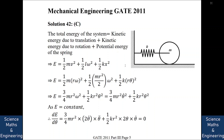Substituting, E = (1/2)m(rω)² + (1/2)(mr²/2)ω² + (1/2)k(rθ)², which simplifies to E = (3/4)mr²ω² + (1/2)kr²θ². Writing ω = θ̇, we get E = (3/4)mr²θ̇² + (1/2)kr²θ². Since E is constant, dE/dt = 0.